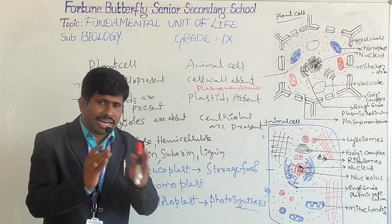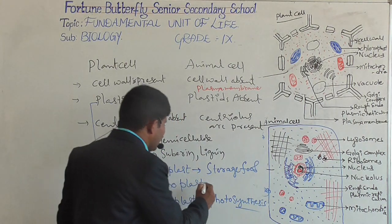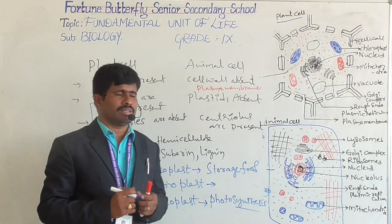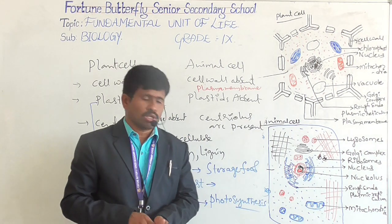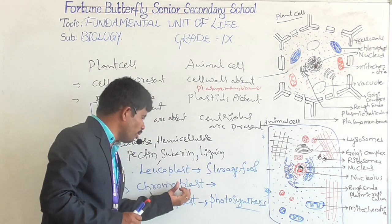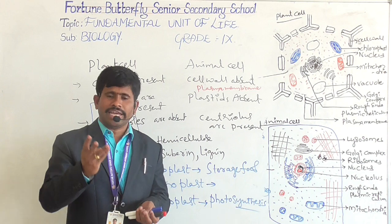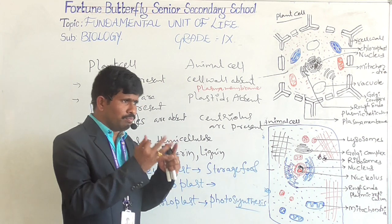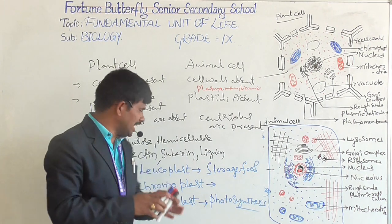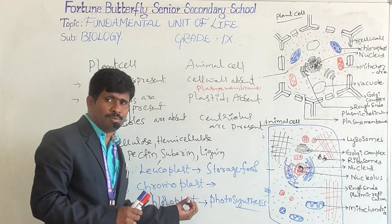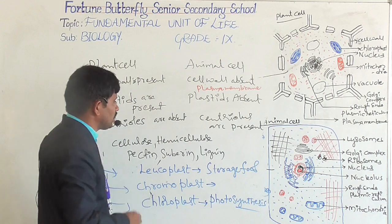Photosynthesis is a unique process — only plants have the ability to prepare their own food material. Chromoplasts are responsible for the different colors seen in flowers and fruits. For example, a tomato is initially white, then becomes green, then changes to different colors — all due to chromoplasts. This is why flowers and fruits come in different colors.